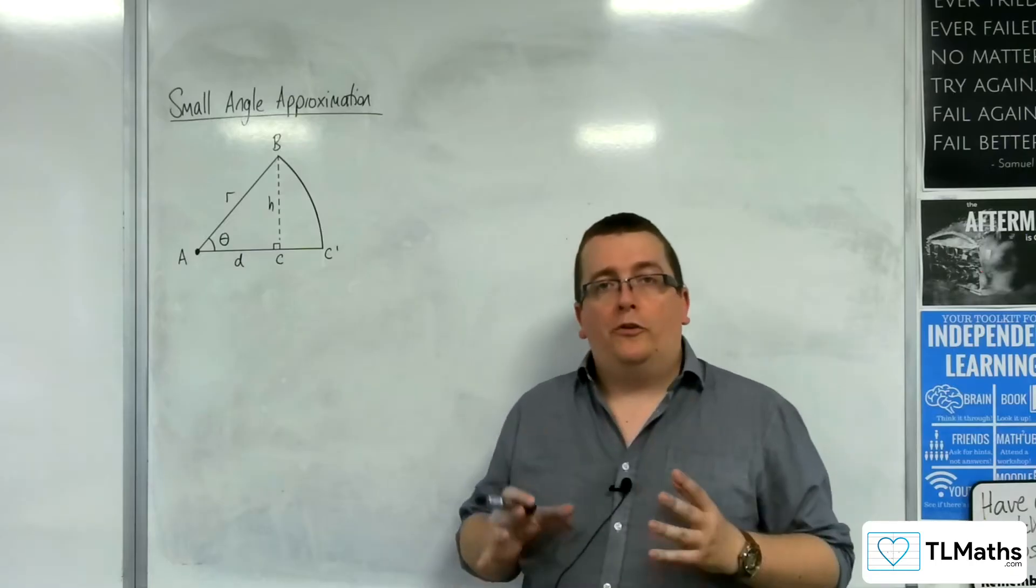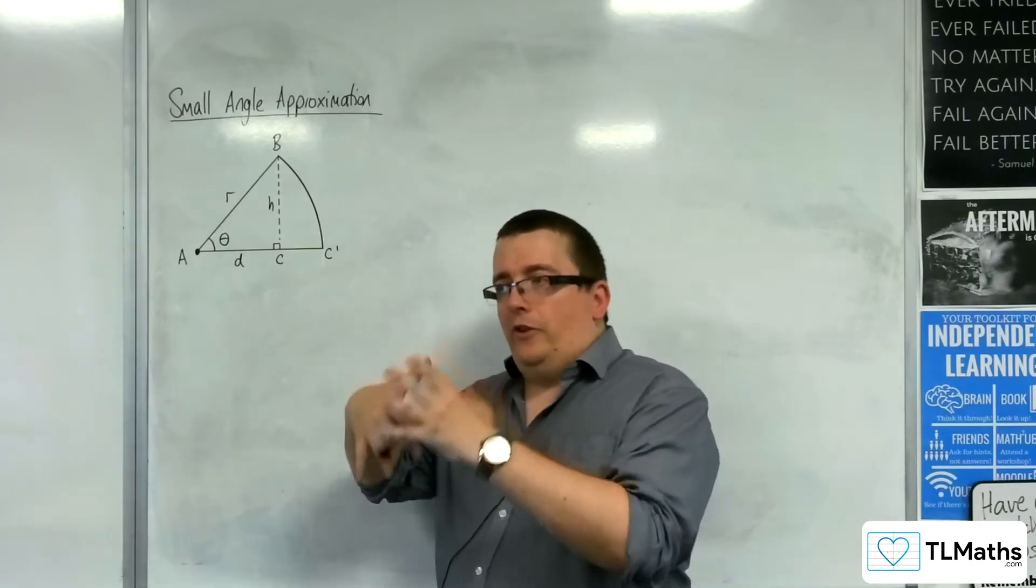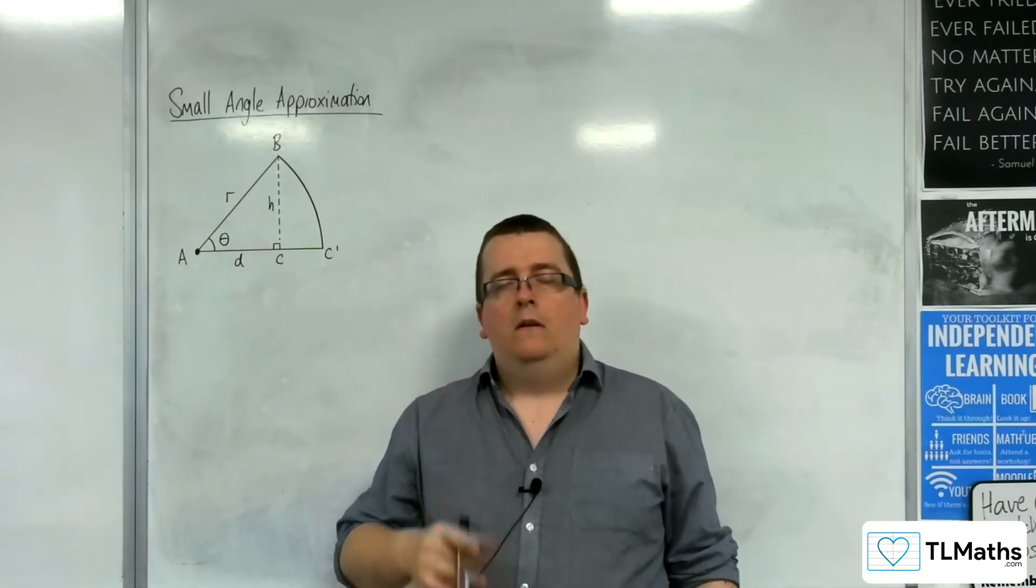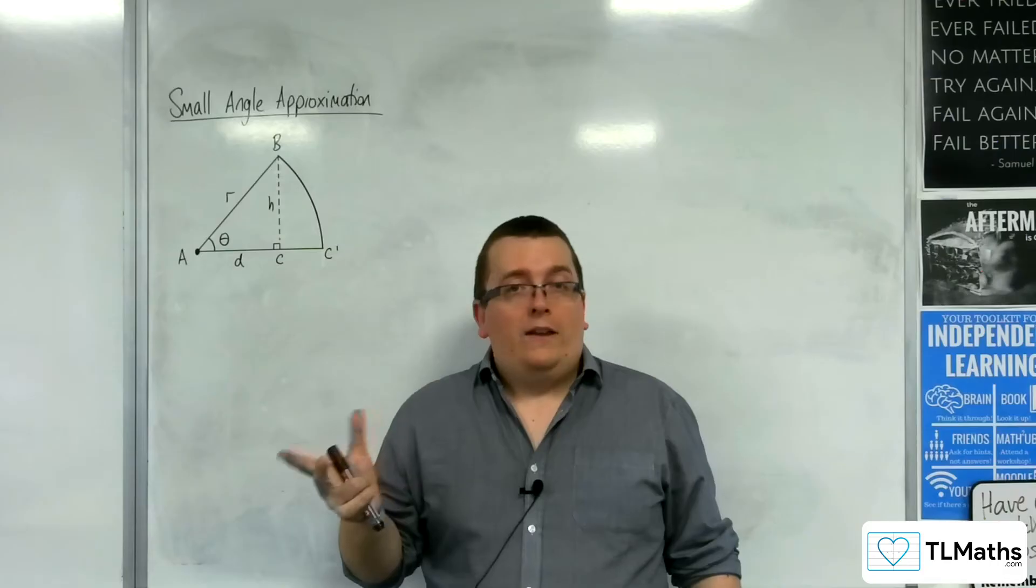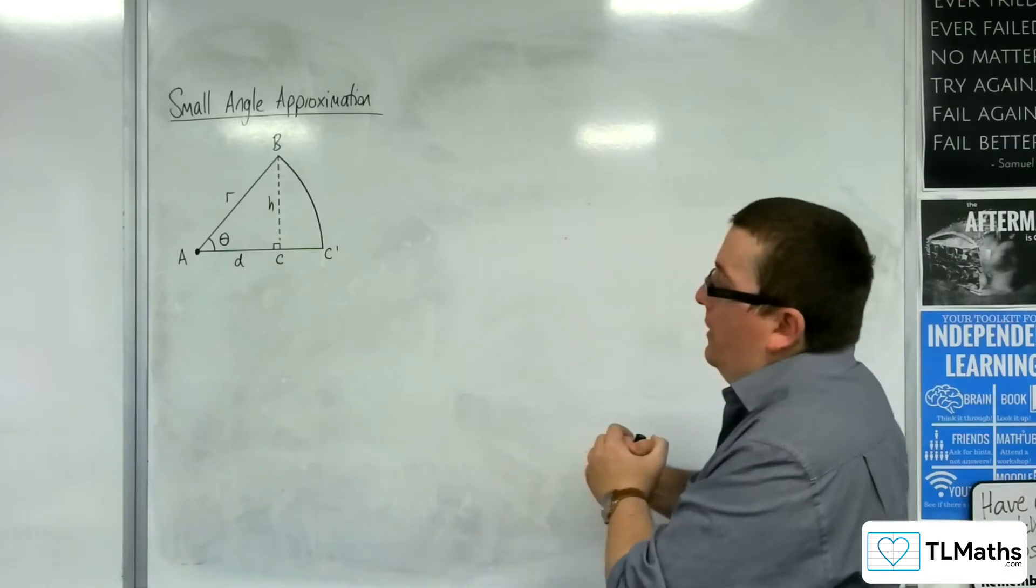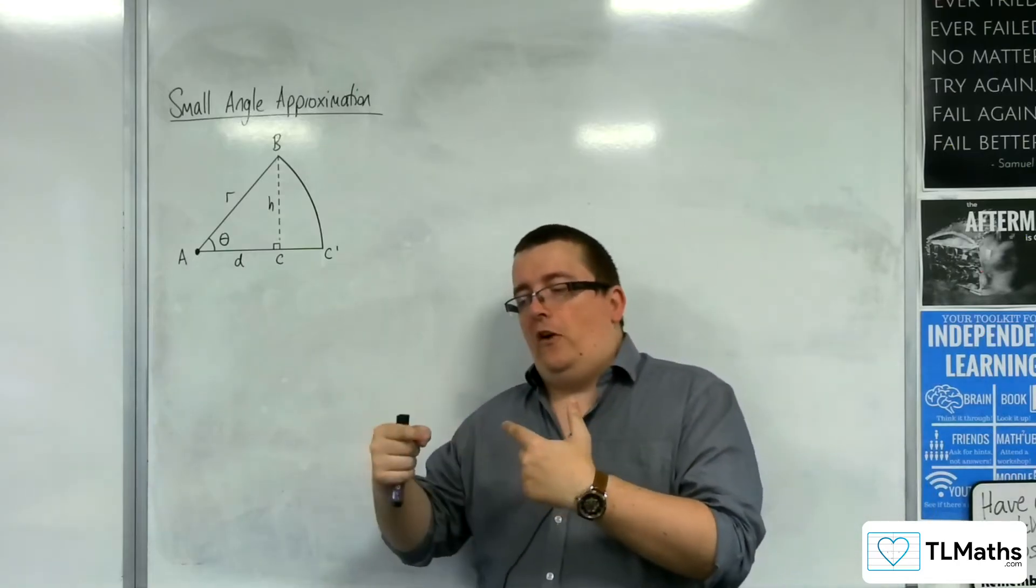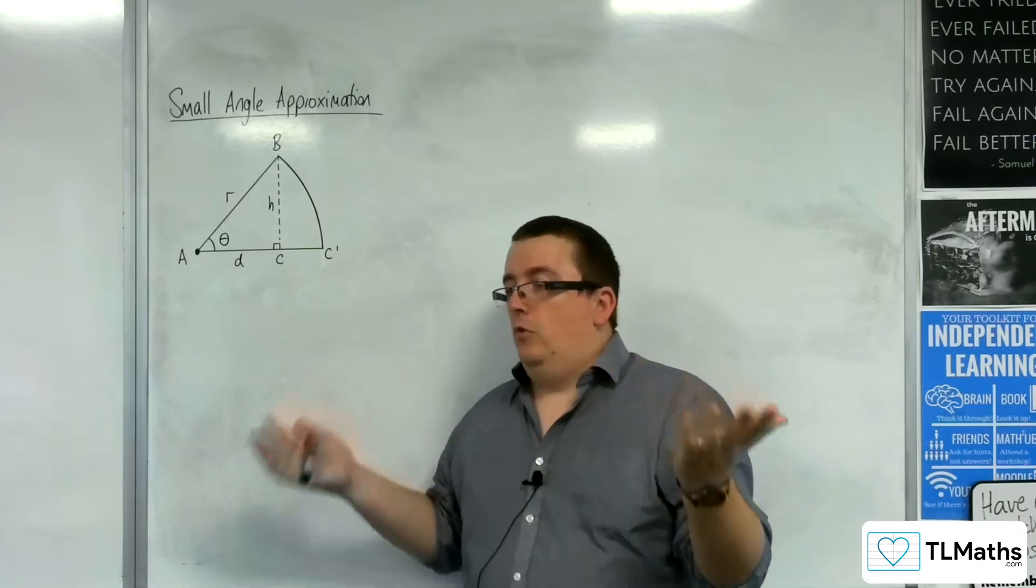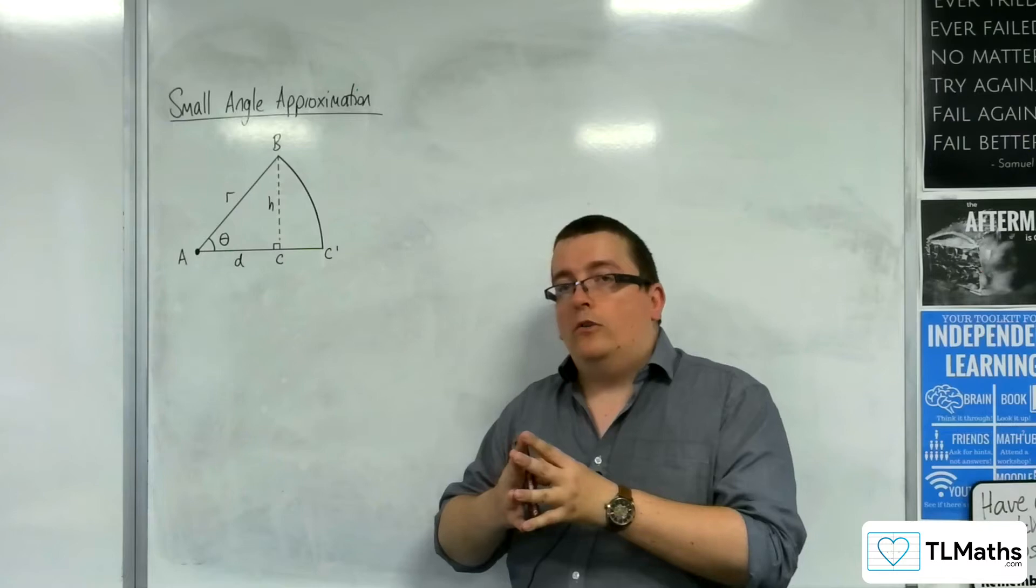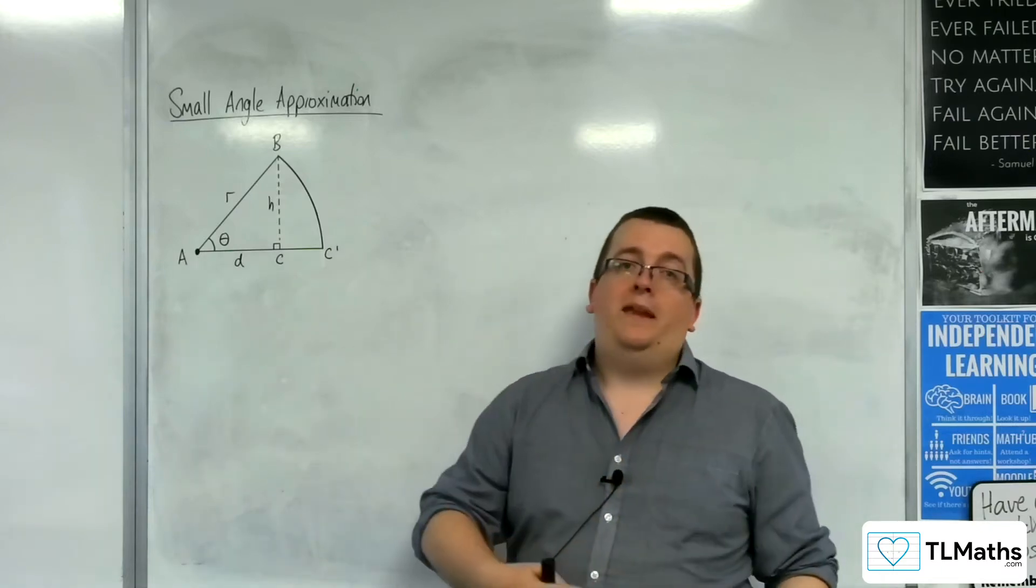Small angle approximations allow you to work out approximations to sine, cosine, and tan for small angles. It kind of effectively explains what it is on the tin. So if you wanted to work out what sine of, I don't know, 0.01 was, then you could use the small angle approximation in order to find it rather than typing it into your calculator.